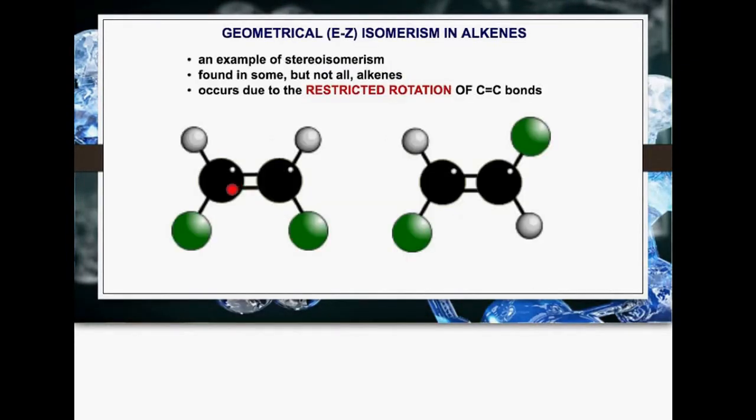Because of this double bond, we get this thing called geometrical isomerism. It only occurs in some types of alkenes, and it's all due to this thing called the restricted rotation of the carbon-carbon bond that we'll discuss in a minute.